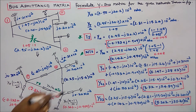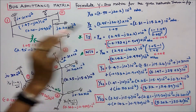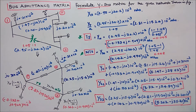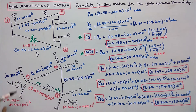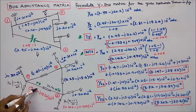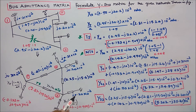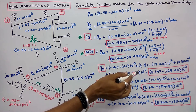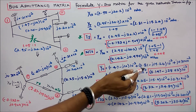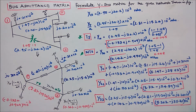The second step is to calculate the diagonal elements of the Y-bus matrix. For y11, four elements are connected. The sum gives y11 equal to 4.147 minus j28.02 into 10 power minus 3.